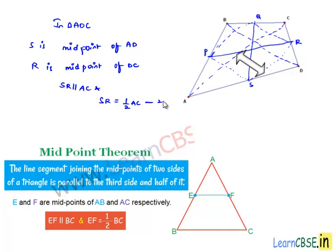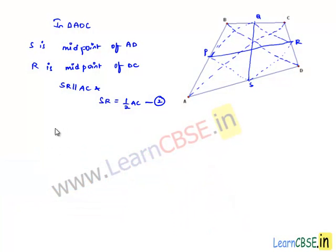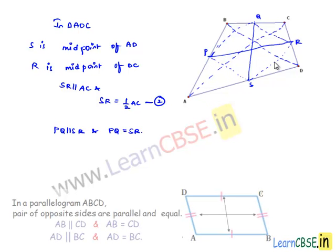By the first and second statements, we can say that PQ is parallel to SR and PQ equals SR. If we observe quadrilateral PQSR, a pair of opposite sides are parallel and equal. Therefore, PQSR is a parallelogram.